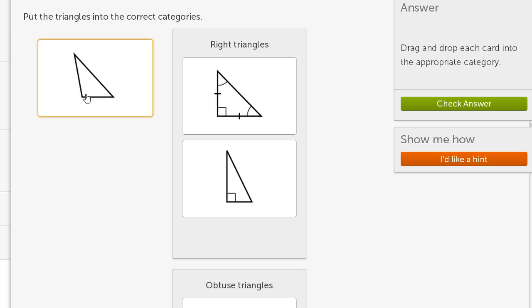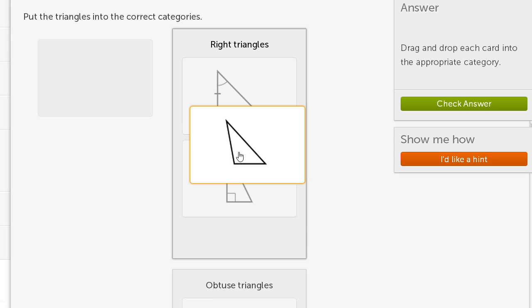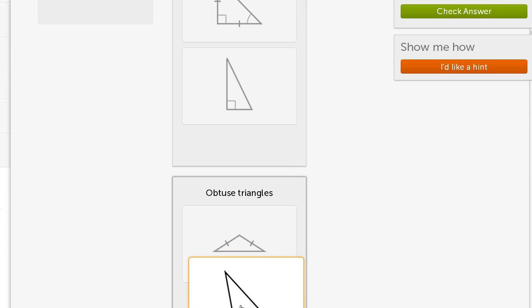And then this one, this angle right over here is clearly even larger, has a larger measure than a right angle. So this angle right over here is more than 90 degrees. It's going to be an obtuse angle. So we will throw it into obtuse triangles.